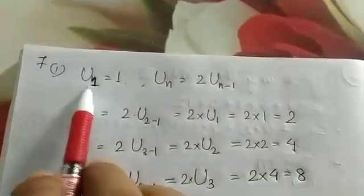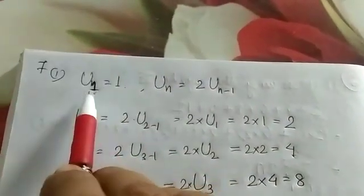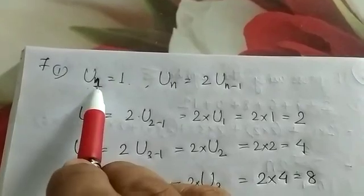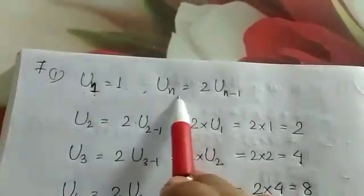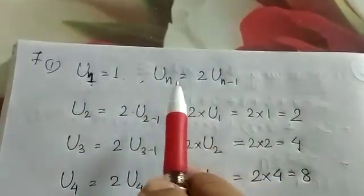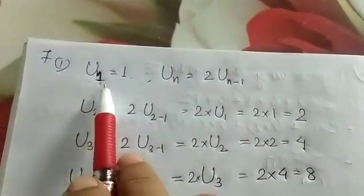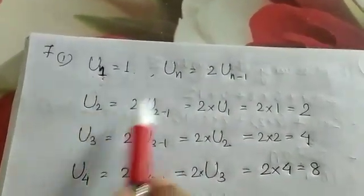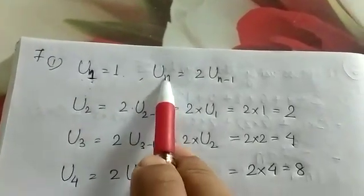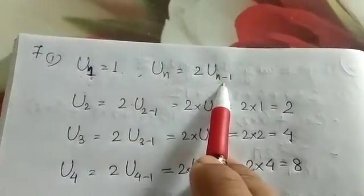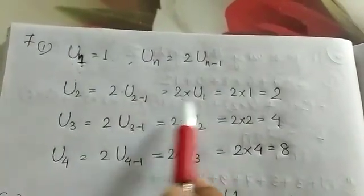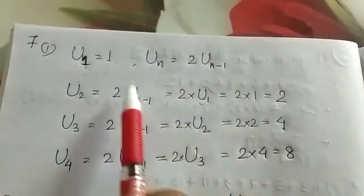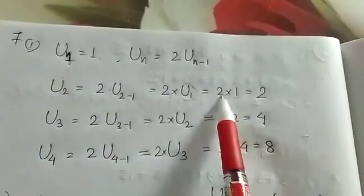Question number 7, number 1: U(1) is given — note that in the book it says n, but it should be 1. U(1) equals 1, and U(n) the nth term formula is given. We need to find the first four values. For U(2), I put n equals 2 everywhere, so U(2) equals 2 times U(2 minus 1) = 2 times U(1) = 2 times 1 = 2.